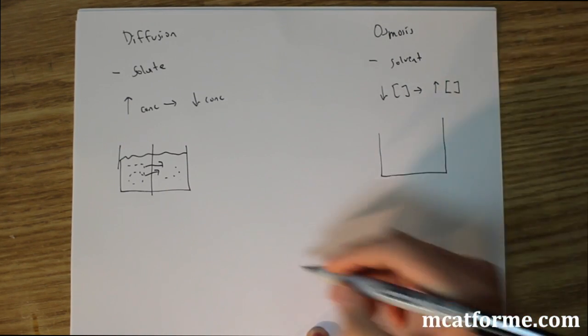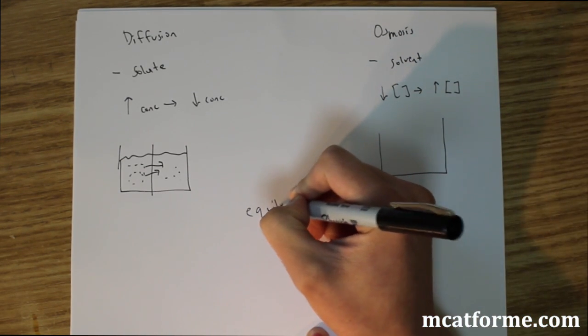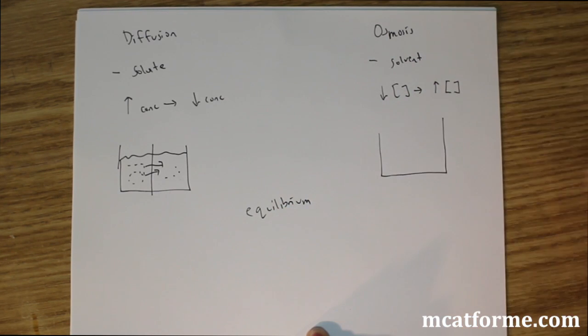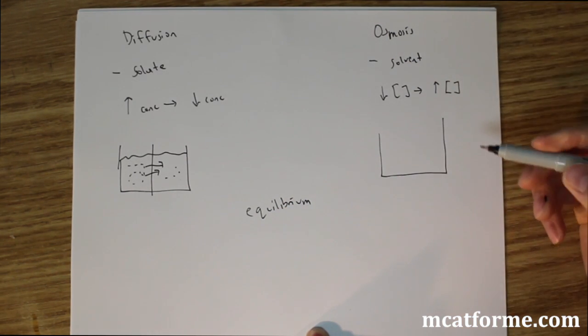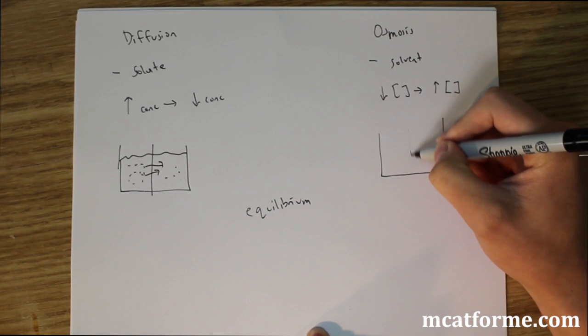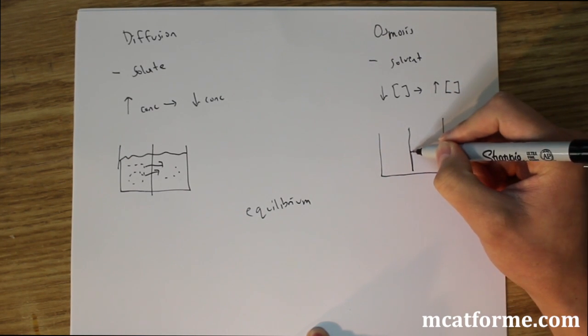So all we're trying to do in both cases is make it so it's equilibrium. So always remember that. Osmosis and diffusion make it towards equilibrium. And they don't require any energy. So we have the same membrane right here.